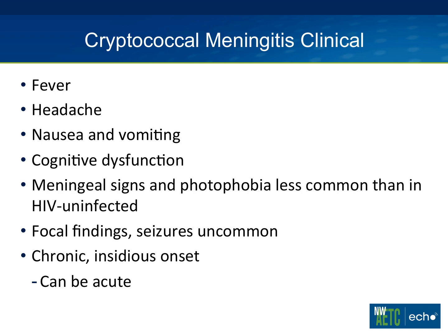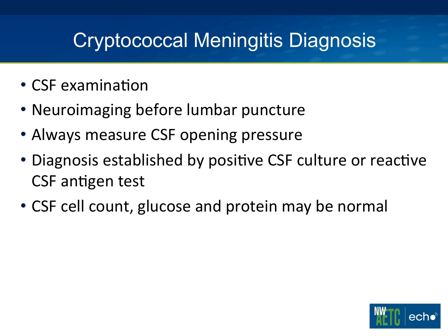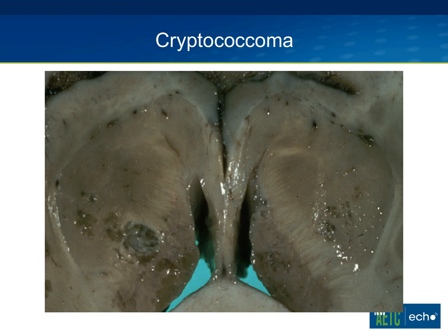Diagnosis is based on CSF, and in the developed world neuroimaging should always be performed before lumbar puncture, since patients with low CD4s are at risk for concomitant toxo or lymphoma and could herniate. Always measure CSF opening pressure. Diagnosis is established by positive culture or a newly reactive antigen test — note that cell count, glucose, and protein can all be normal. Cryptococcomas, also called gelatinous pseudocysts, are perivascular spaces filled with cryptococci that can look like microvascular disease on neuroimaging, which explains our patient's CT finding.